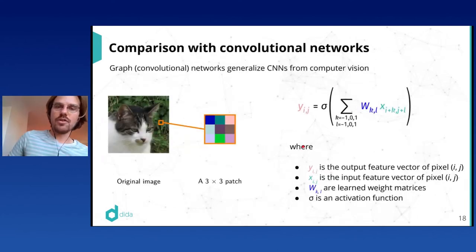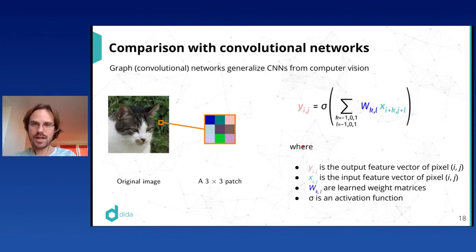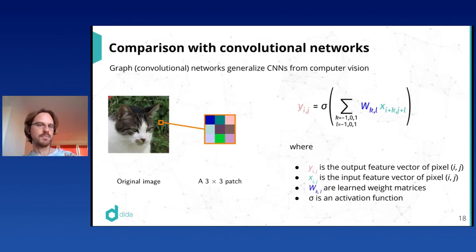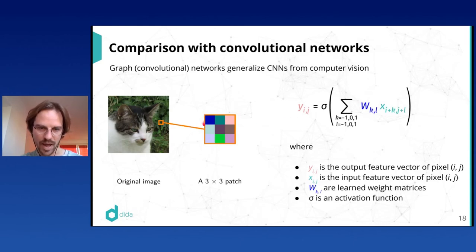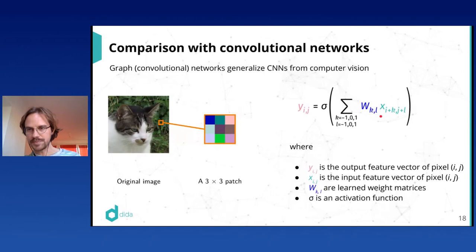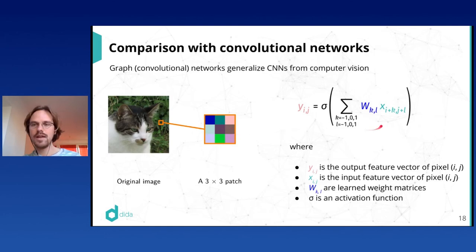Now let's compare with convolutional networks. In a conv net, we have an image where each pixel has an input feature tensor — in the first layer, just the red, green, and blue channel intensities. We compute a new feature vector for each pixel at position (i, j) by looking at a three-by-three patch of pixels around it. For each pixel in this patch, we take its input feature tensor, multiply by a learned matrix — with one different matrix for each position in the patch — add these nine vectors, and apply a non-linear activation function.